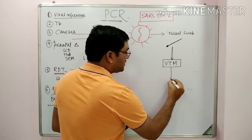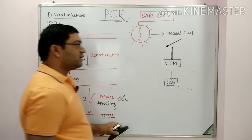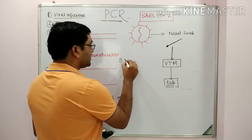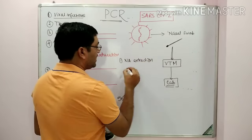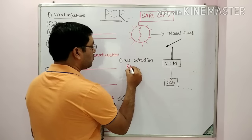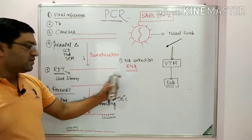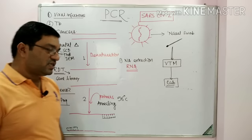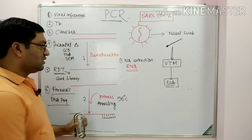When the sample reaches the laboratory, the first step is nucleic acid extraction — RNA extraction. As it is an RNA virus, the first step is extraction of RNA by various chemicals. There are various steps in the extraction process.